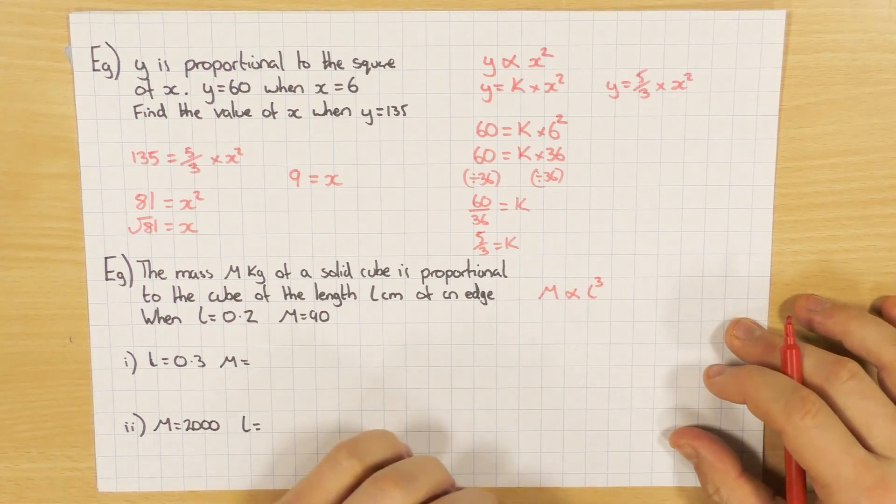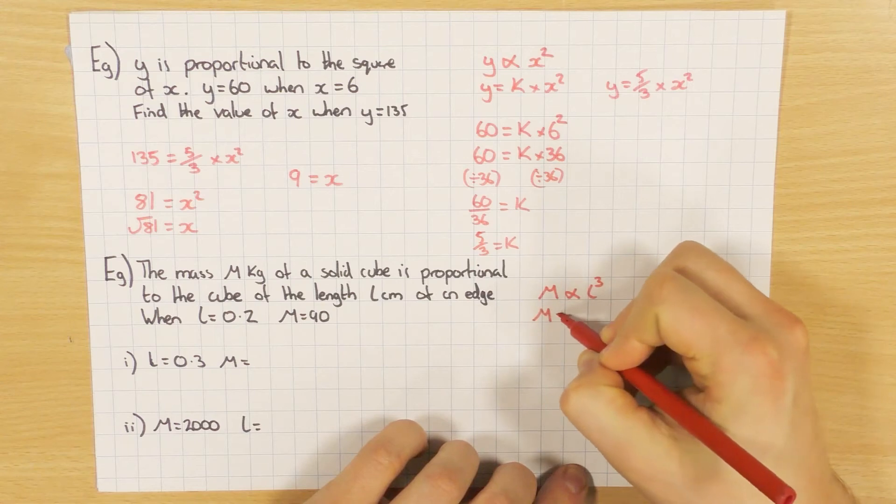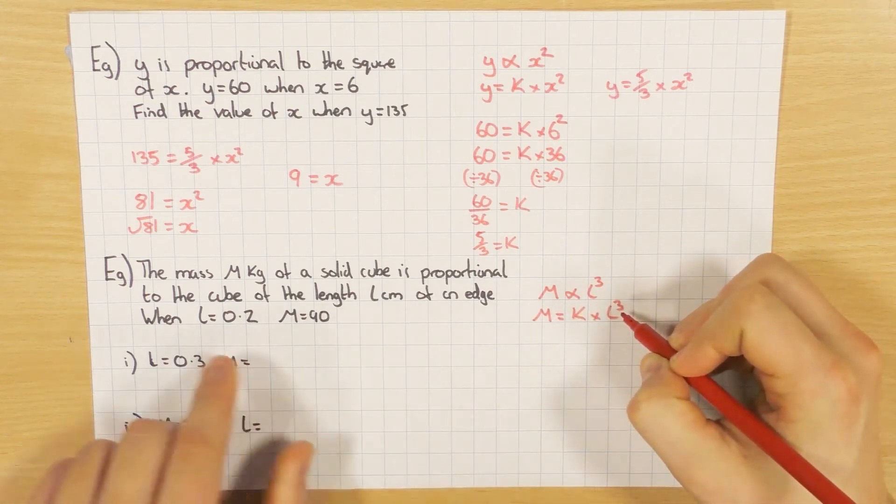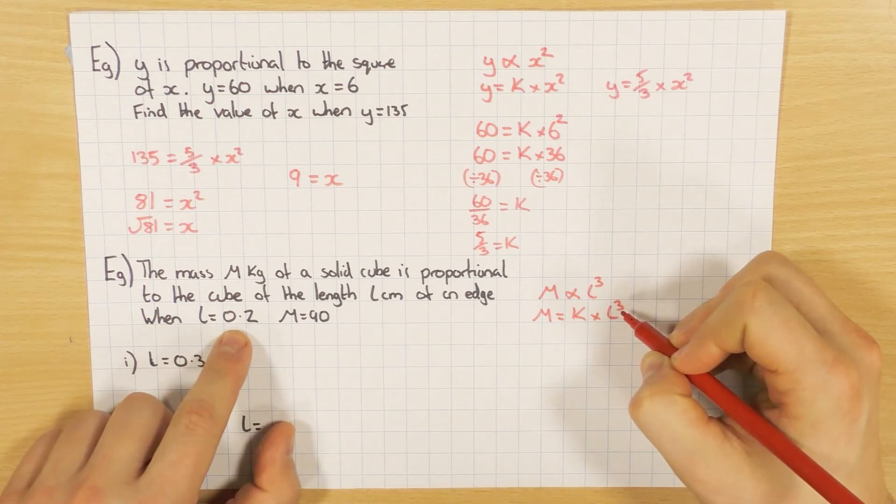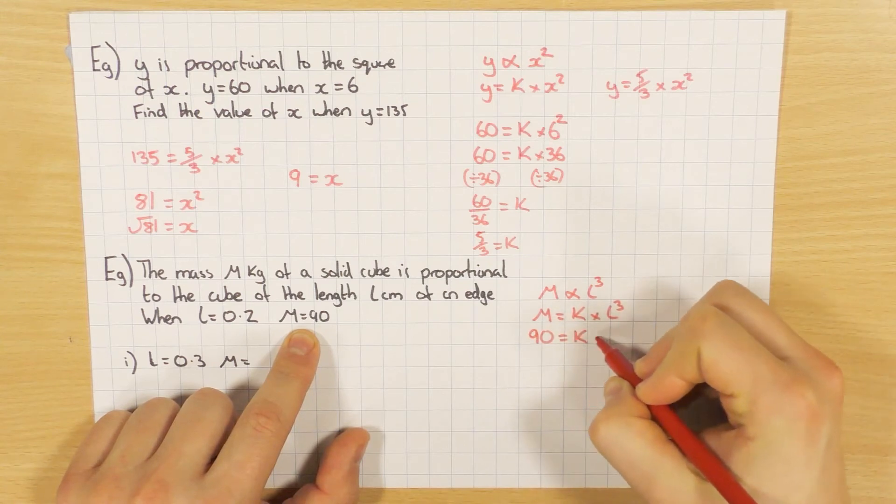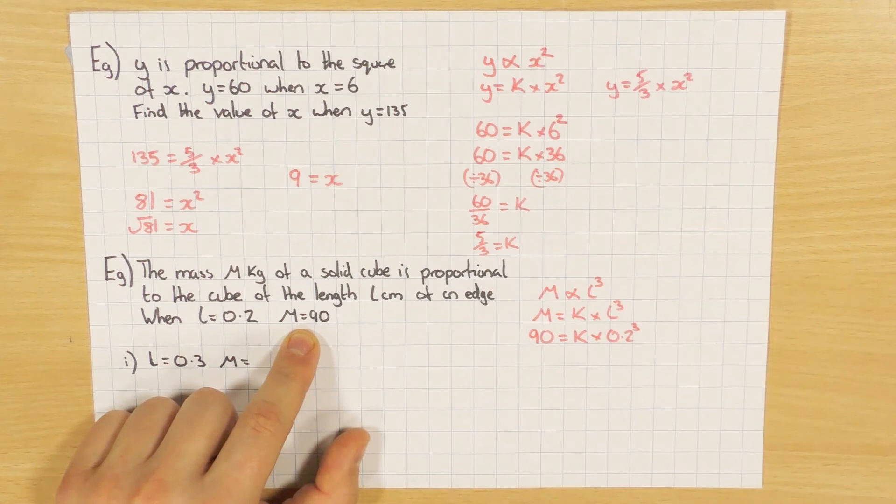Let's make our formula then. So m equals k times l cubed. And again, I've got l to be 0.2 and m to be 90. So let's substitute those values in. 90 equals k times 0.2 cubed.